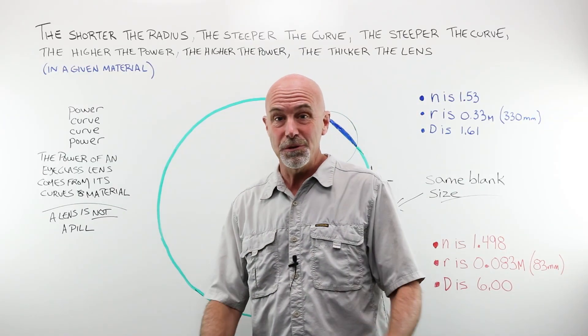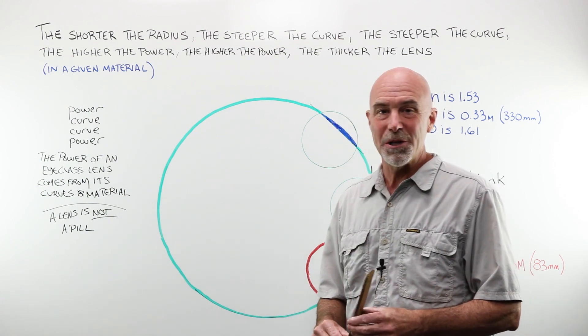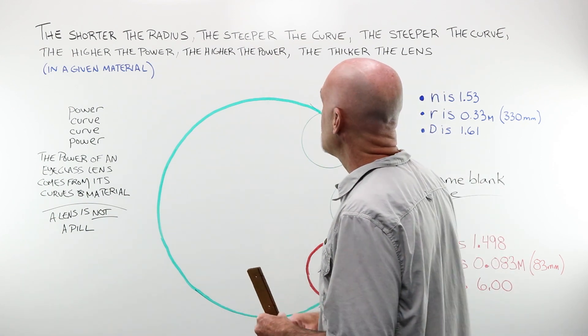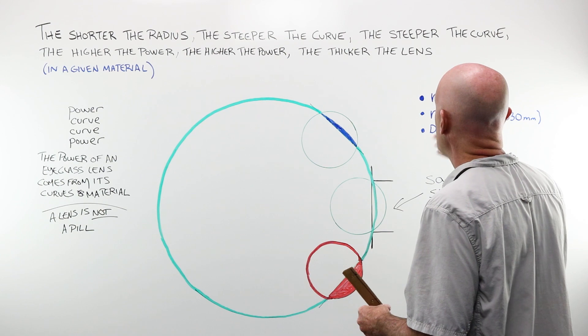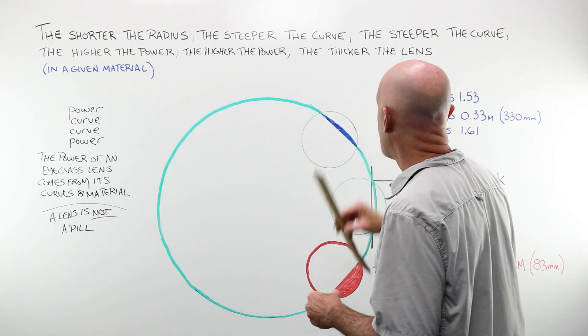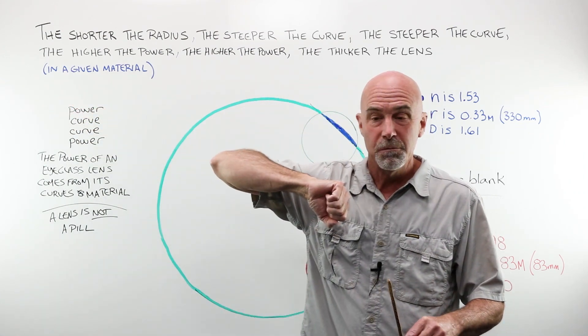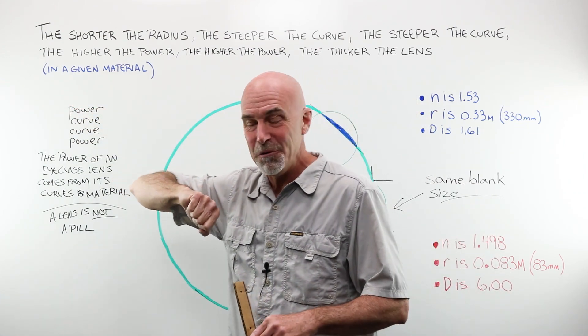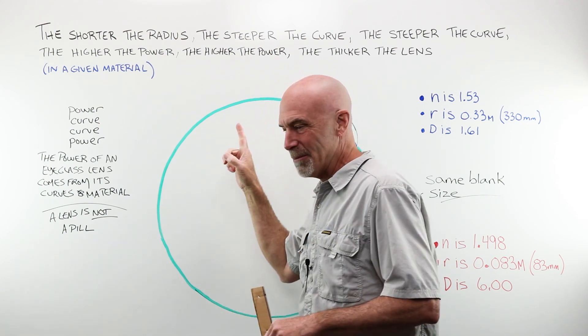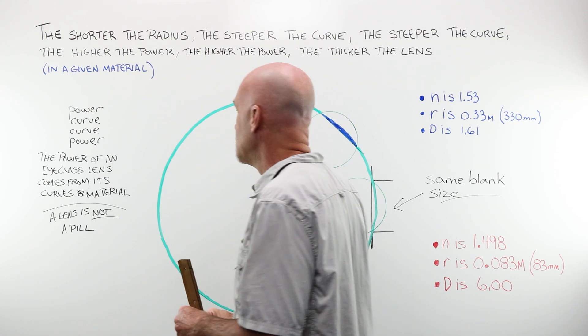An excellent place to start is the Laramy-K Optician Works mantra: The shorter the radius, the steeper the curve, the steeper the curve, the higher the power, the higher the power, the thicker the lens in a given material. It will never let you down. You should already have that memorized, and these concepts should already be familiar to you.